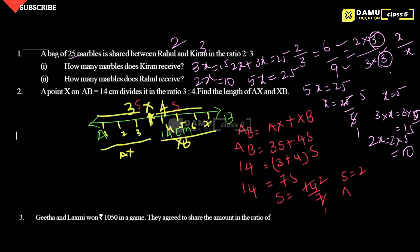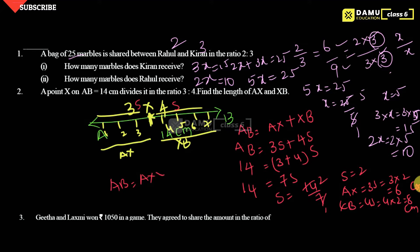Then AX will be equal to 3s, that is 3 into 2, which is 6 centimetres. Then XB will be equal to 4s, that is 4 into 2, which is 8 centimetres. If you add both, 6 plus 8 gives AB equal to 14 centimetres. That is the value.